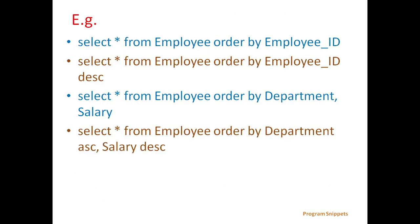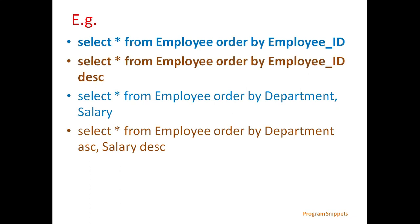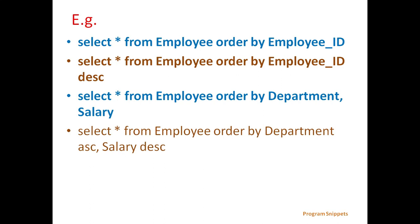Examples with ORDER BY clause: SELECT * FROM employee ORDER BY EMPLOYEE_ID — here data is displayed sorted by EMPLOYEE_ID in ascending order by default, since we have not specified ascending or descending. Then SELECT * FROM employee ORDER BY EMPLOYEE_ID DESC — here data will be displayed with EMPLOYEE_ID in descending order. SELECT * FROM employee ORDER BY DEPARTMENT, SALARY — employee data is first sorted by department, and inside each department it is sorted by salary.